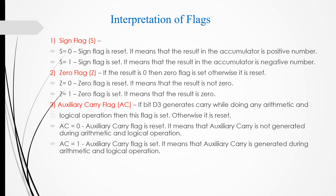For the auxiliary carry flag: if bit D3 generates a carry while doing any arithmetic or logical operation, this flag is set; otherwise it is reset. When auxiliary carry equals 0, the flag is reset, meaning no auxiliary carry was generated. If AC equals 1, the flag is set, meaning auxiliary carry was generated during the arithmetic or logical operation.